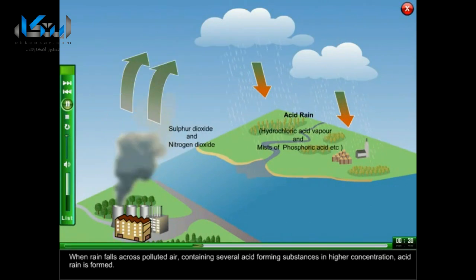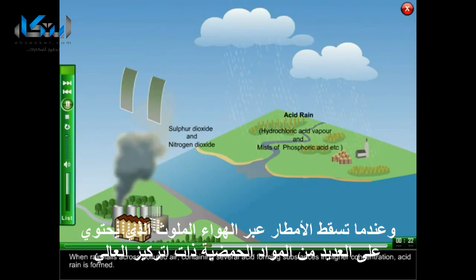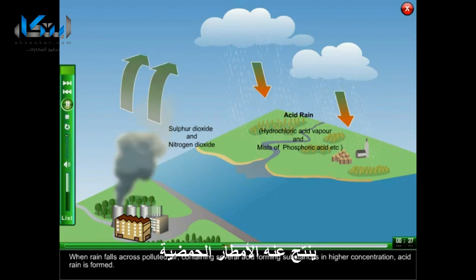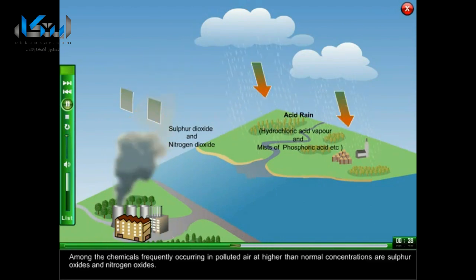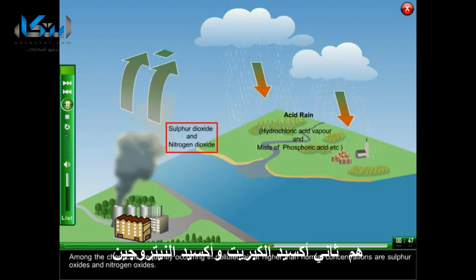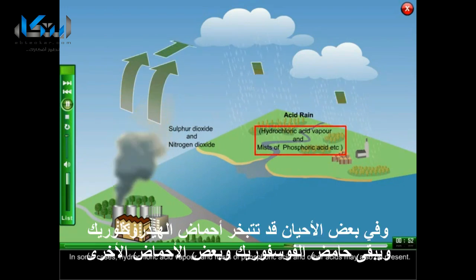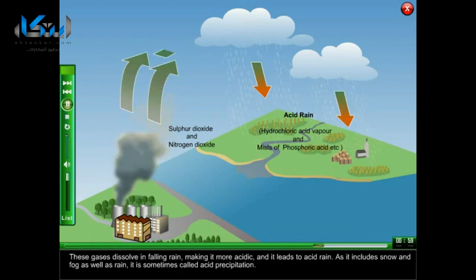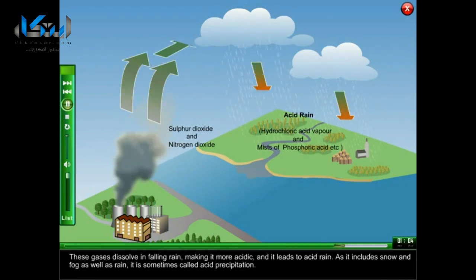When rain falls across polluted air containing several acid-forming substances in higher concentration, acid rain is formed. Among the chemicals frequently occurring in polluted air at higher than normal concentrations are sulfur oxides and nitrogen oxides. In some cases, hydrochloric acid vapor and mists of phosphoric acid and other acids may also be present. These gases dissolve in falling rain, making it more acidic, and it leads to acid rain.